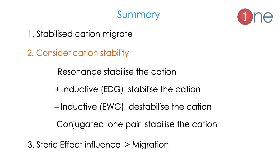Let us summarize. The most important point: the stabilized cation always migrates. Cation stability is determined by: resonance stabilization, positive inductive effect (electron-donating groups stabilize), negative inductive effect (electron-withdrawing groups destabilize), and conjugated lone pairs also stabilize. Moreover, when there is competition between steric effect and migratory aptitude, steric effect dominates.